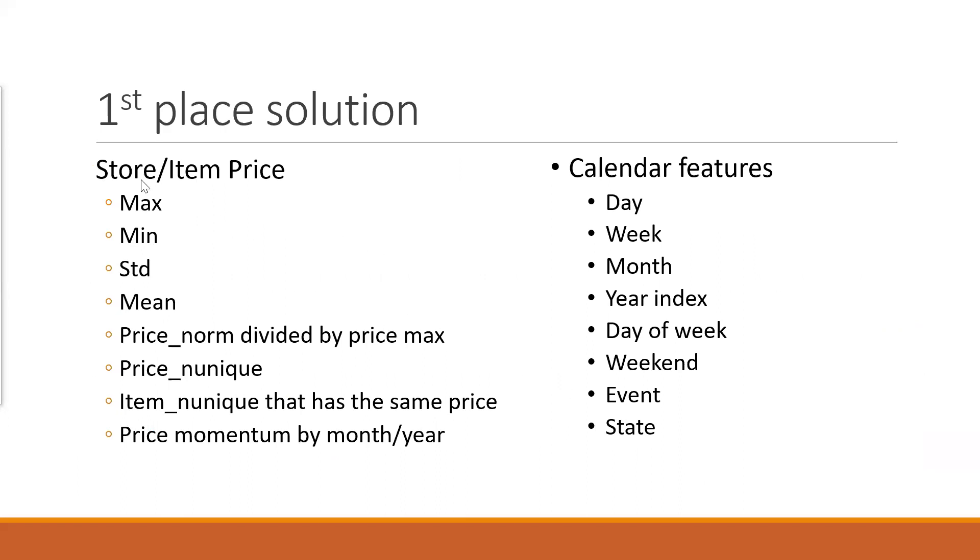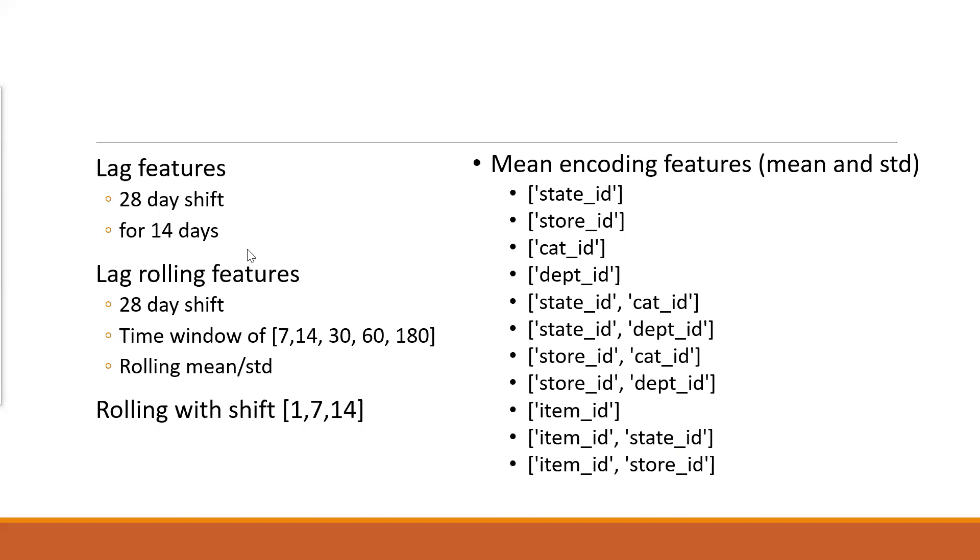So what features they extract? For the store item price, they extract max, mean, variations. Then they also do the normalized price divided by the price max. And also they count the number of uniques of the price. And they also have for the same price, what's the number of unique items and the price momentum. They extract lots of stats about the prices for that item given that store and item. And then there's this kind of features. We have the day, week, the year index, weekend. And of course, the event and state.